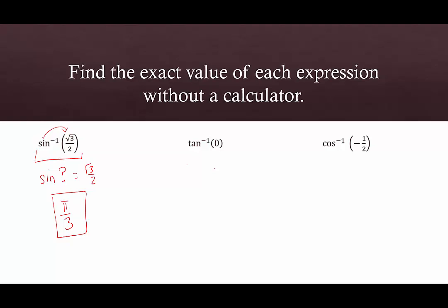For the next example, tangent inverse of 0 is asking: tangent of what is equal to 0? That would be tangent of 0, so the answer is 0. And sine inverse of root 3 over 2 would equal pi over 3.